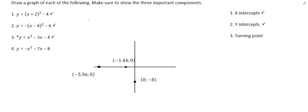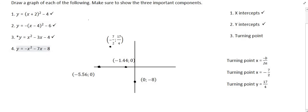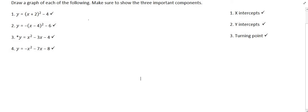All that remains is the turning point. As in question 3, the equation is not in turning point form, so we use the negative b over 2a method to find the x value, giving negative 7 over 2. Substituting that into the original equation gives a y value of 17 over 4, which is approximately 4.25. We can now locate the turning point on the diagram, draw the graph, and that brings us to the end of this video.